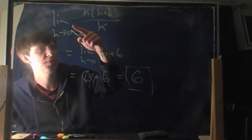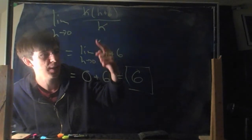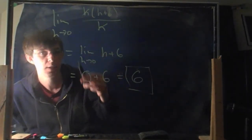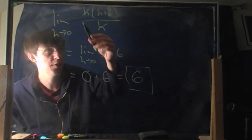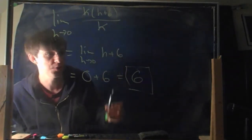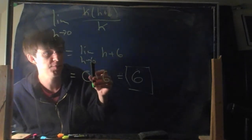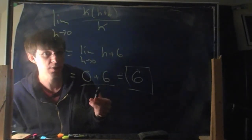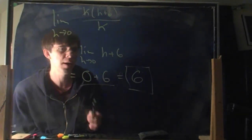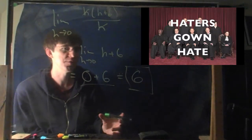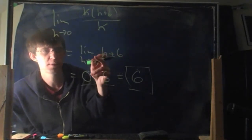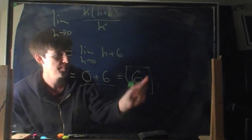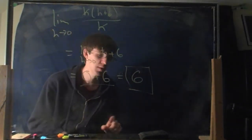Notice I wrote 'lim h goes to 0' every single time. That's because this is an operation — it says I'm going to figure out what this value approaches when h goes to 0. You should be writing it every time until the very end when you plug it in. There are some 'lim haters' out there who don't like to write this, but it's a real operation and you should write it in your equations every time.